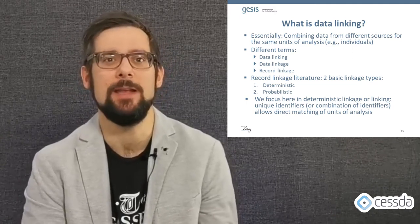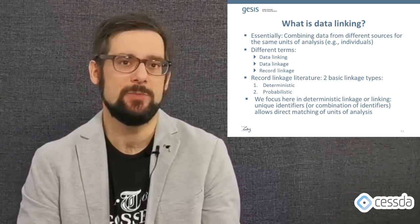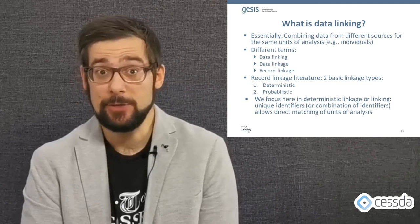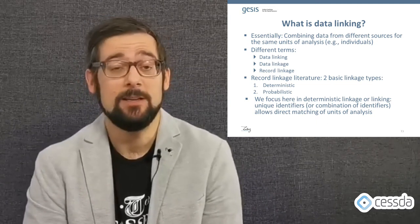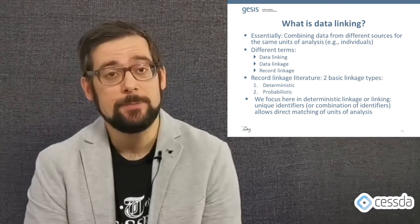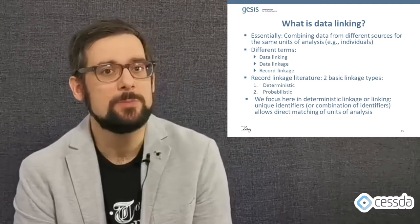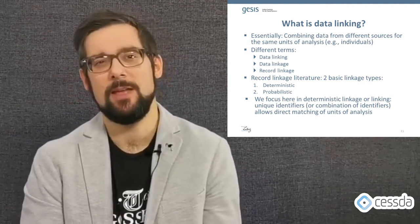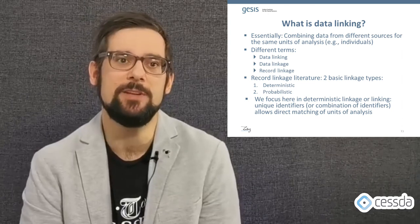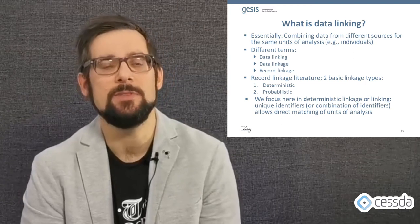After discussing what social media data is and how you can collect it, the next thing I want to talk about is what data linking is. Essentially, data linking means combining any source of data with another source of data for the same unit of analysis — in the social sciences, these would usually be individual respondents or participants. You may find different terms in the literature: data linking, record linkage, or data linkage. There are two types of linkage: probabilistic and deterministic. I'm going to focus on deterministic linking, which means you have a unique identifier or combination of identifiers to match individuals in the different types of data you combine.